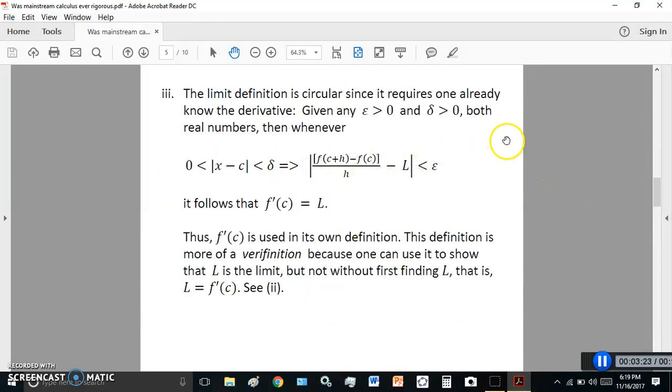The limit definition is itself circular, because it requires that you know the derivative. Do you see this L here? This is the derivative. Okay. So, you can't just suddenly make up another circular definition, say, given epsilon greater than zero, delta greater than zero. Then, whenever this distance is less than delta, this distance here implies it's less than epsilon. Where did you get this L from? L was derived from using the first principles method. Therefore, L is equal to f'(c), or f prime of c, which is the derivative. So, you're using it in its own definition, which is absolute garbage.